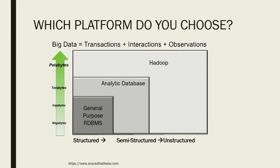Which platform do we choose for big data analytics? As you can see, data has grown from megabytes, gigabytes, terabytes, petabytes, and now has reached more than zettabytes. Starting with general-purpose RDBMS — relational database management systems — which handled structured data, it moved to semi-structured analytic databases, and then to a totally unstructured format using Hadoop or big data analytics platforms. What we mean by unstructured includes files, images, videos, word text — everything in no fixed format.